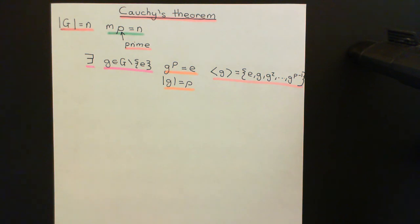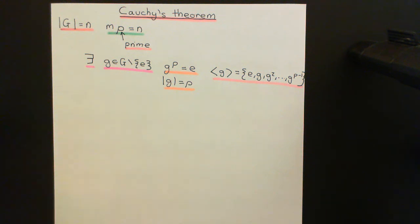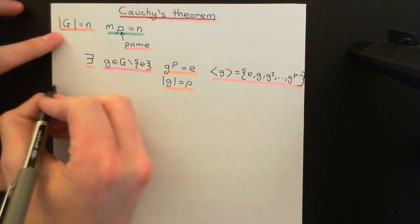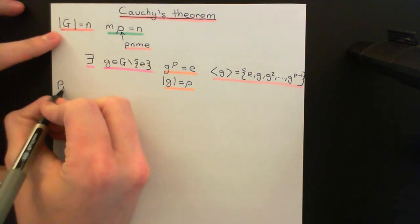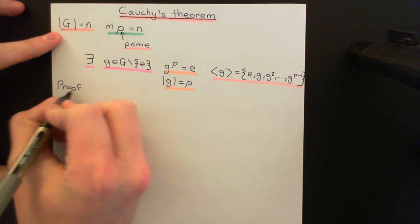So look for the primes in the prime factorisation of the order of a group — you can always conclude that there are cyclic subgroups of order equal to any of those primes. That is what Cauchy's theorem says. Now we're going to prove it, and the proof is going to use group actions.